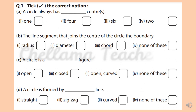Question 2. Take the correct option. Question A: A circle always has dash centers — 1, 4, 6, or 2. The correct option is 1.